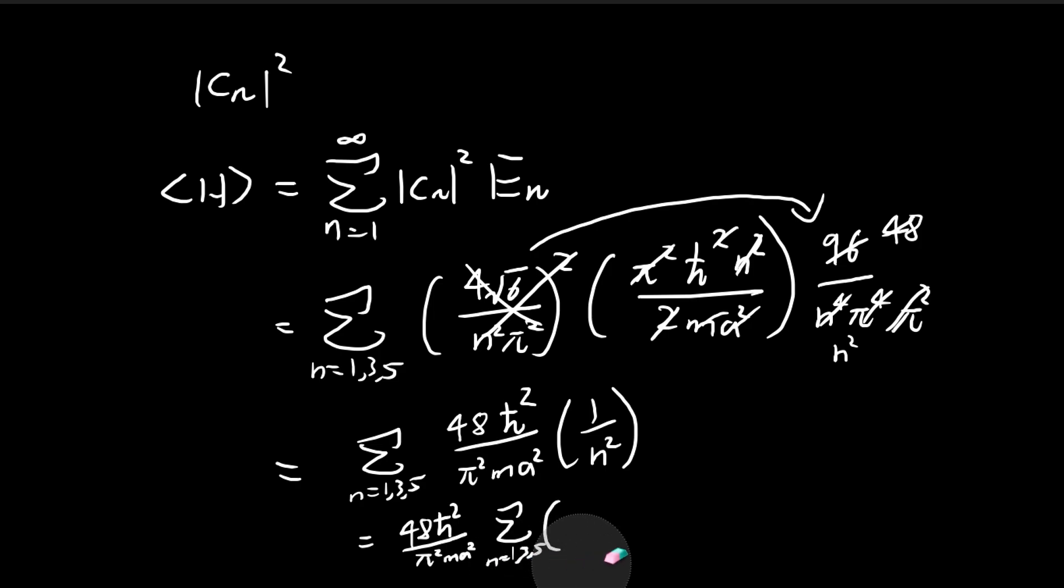So I'm just going to write this out explicitly. This is just going to be 1 plus 1 over 3 squared plus 1 over 5 squared all the way to infinity. So the denominator is always an odd number squared. And if you look this up, this is actually equal to pi squared over 8. So later on, I'm going to tell you a way on how to derive this. But for the time being, just take it for granted that this infinite series here is pi squared over 8.